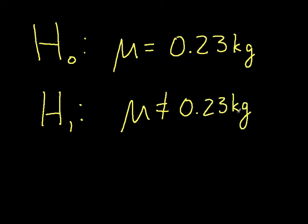0.23 kilograms is the proper weight for the objects produced by the machine. And we'll suppose that we know that the standard deviation of the weights of the objects produced by the machine is 0.01 kilograms.